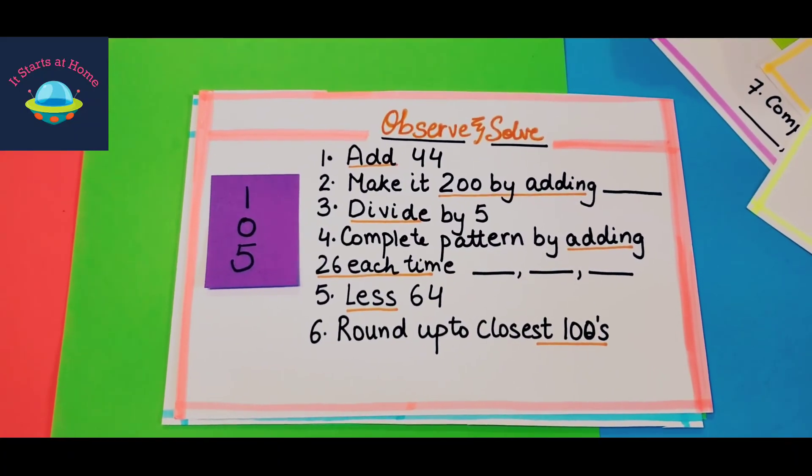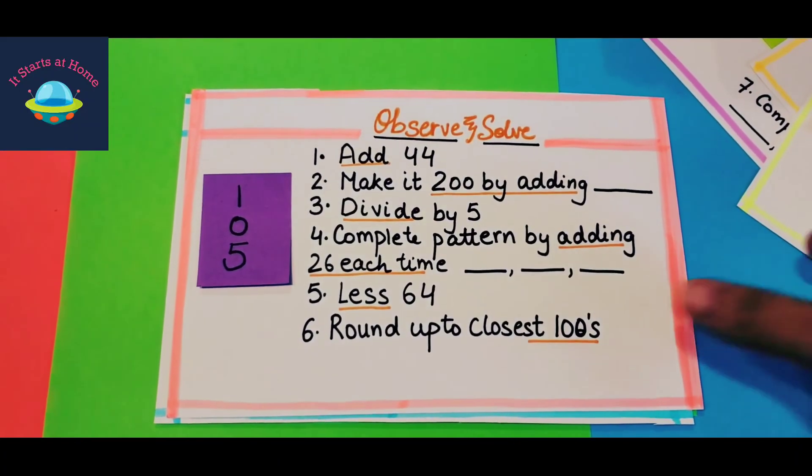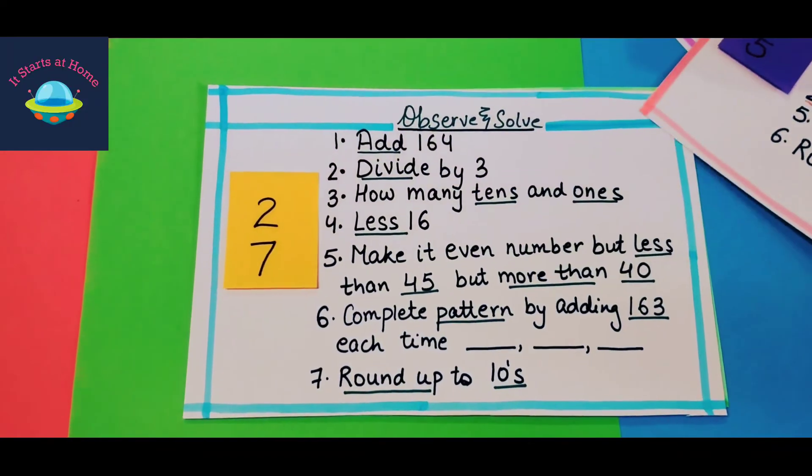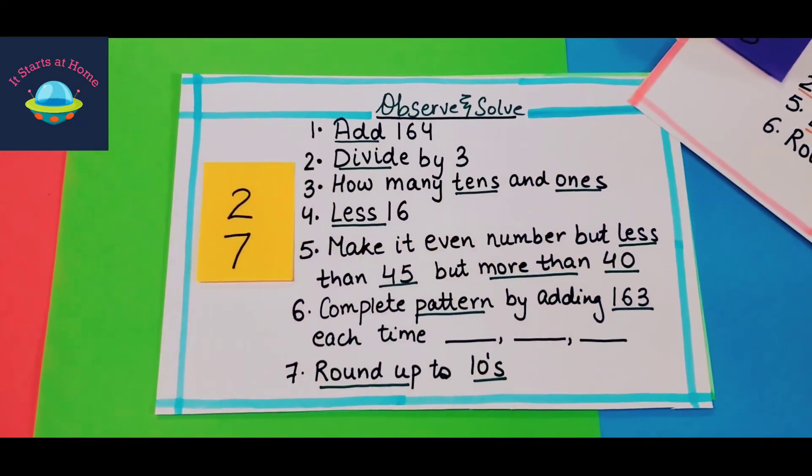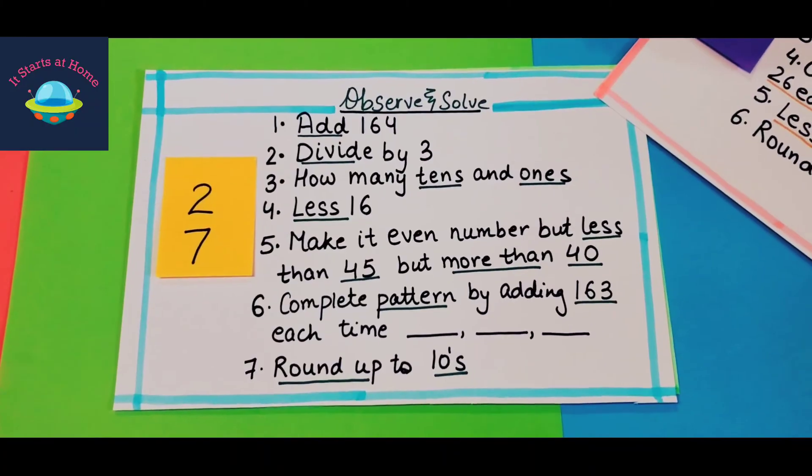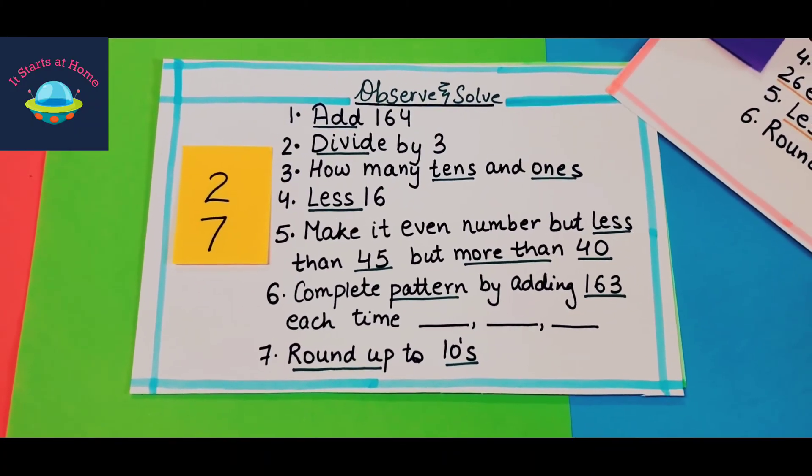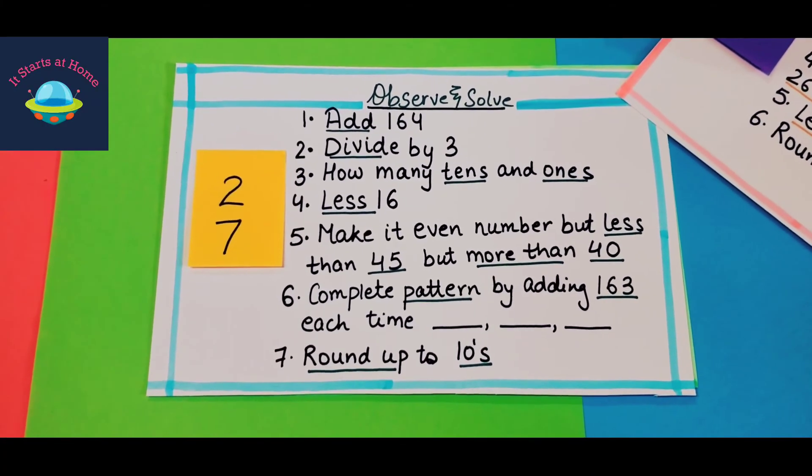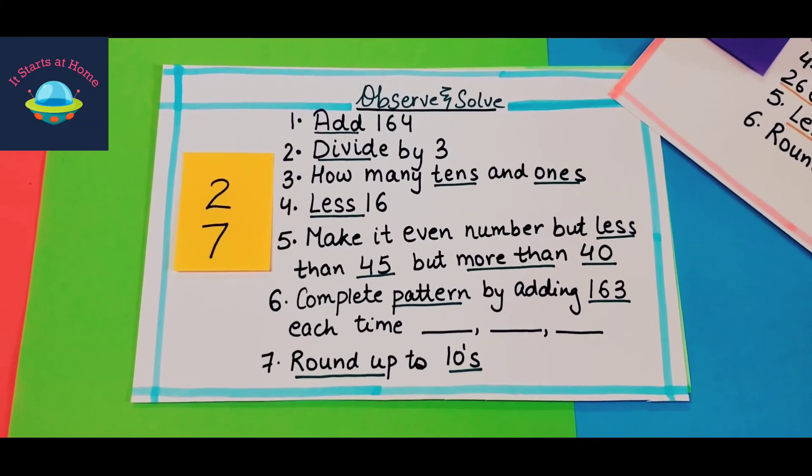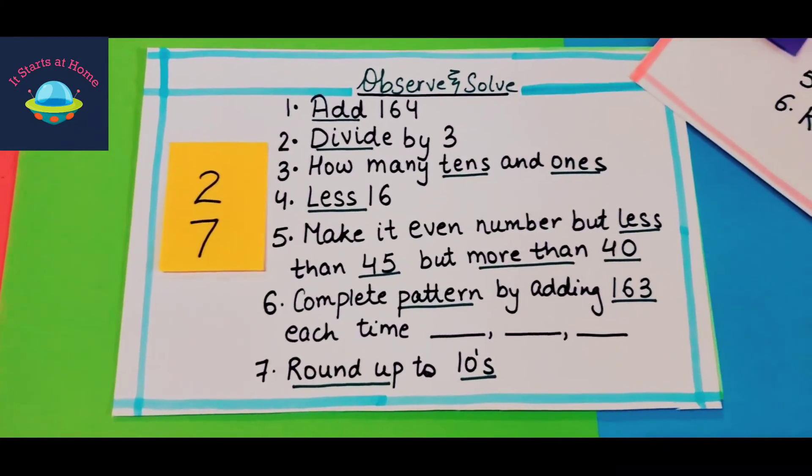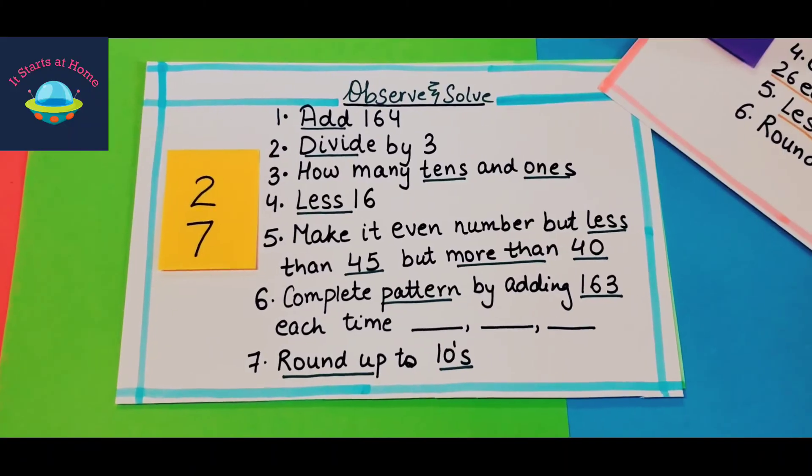Then we have 27, add 164, divide by 3, how many tens and ones. This is completely DIY, amazing for math practice in the evening. Just one card and they're trying to do seven different topics. That's what I loved when I was creating these cards, that they are so versatile and can be done in so many different ways.